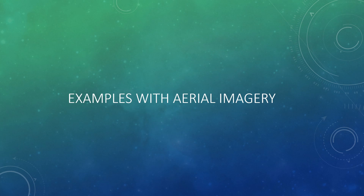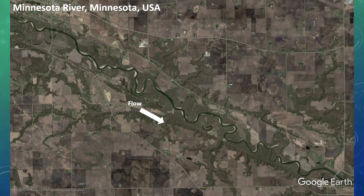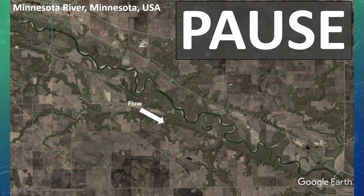Now we're going to go through some examples of the different channel types using Google Earth Pro. You'll be prompted to pause the video to try and discern what channel type you're looking at before I break down some of the larger pieces of evidence. Let's start with the Minnesota River in the state of Minnesota. Go ahead and pause the video now to try and determine what type of channel we are looking at.